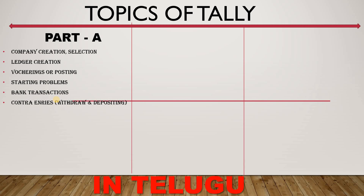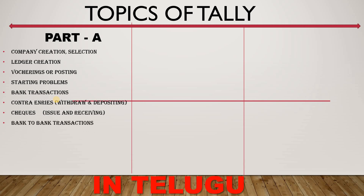Contra Entry also covers checks received and check transactions. For bank accounts, if Syndicate Bank has a lesser amount and SBN Bank has a greater amount than Syndicate Bank, we handle these as bank-to-bank transactions.